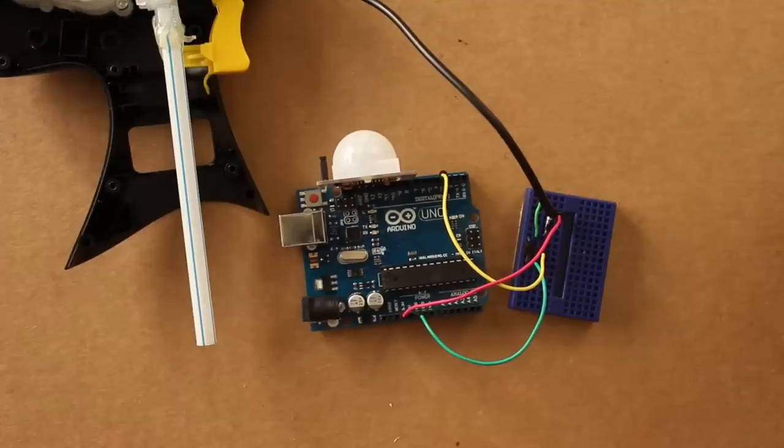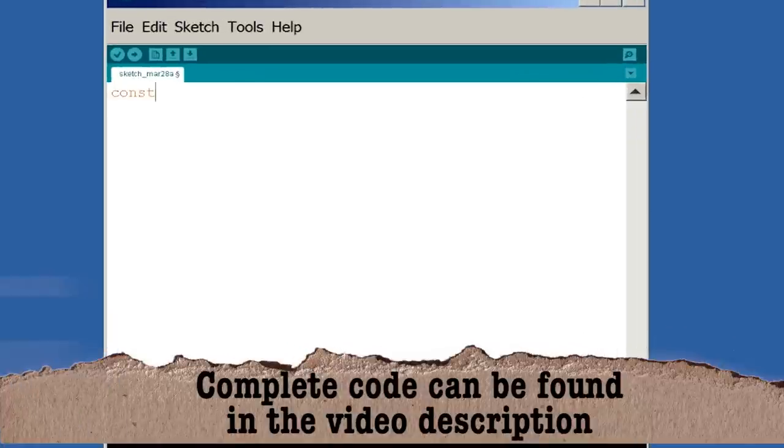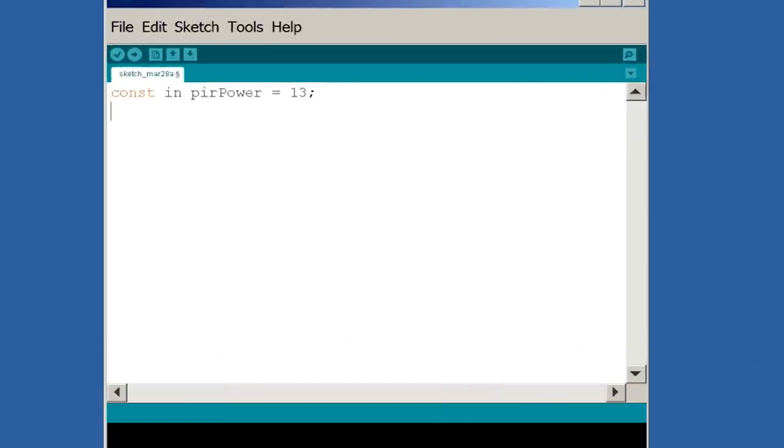Alright that's it for the hardware. Now let's jump over to the software. Make a new sketch and let's set some new variables. Let's make a variable for the motion sensor's power pin and set it to port 13. Then let's make one for the motion sensor's signal output and set it to pin 12.